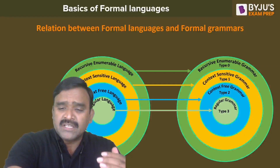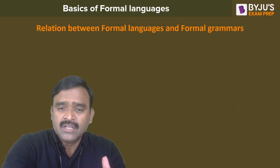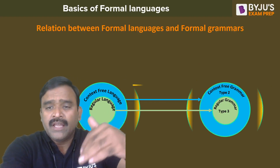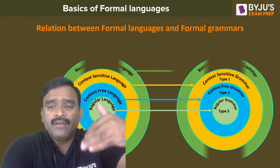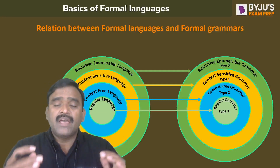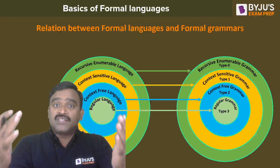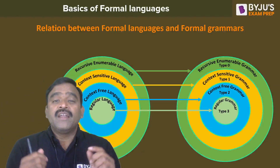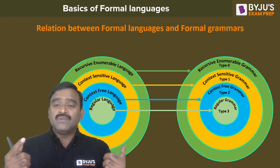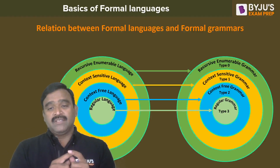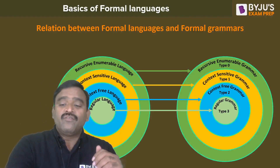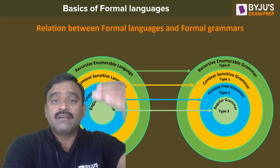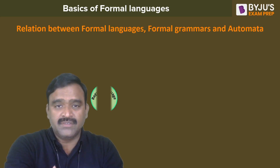Every Type 3 language is also Type 2, every Type 2 is also Type 1, and every Type 1 is also Type 0. That means every regular language is a context-free language, every context-free language is a context-sensitive language, and every context-sensitive language is recursively enumerable. This is the relation among formal languages defined by Noam Chomsky — that is why it is called the Chomsky hierarchy of formal languages.